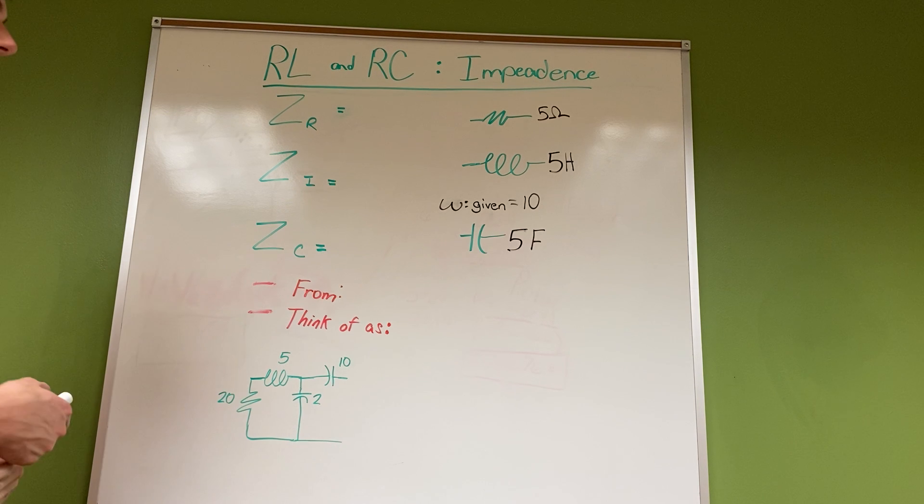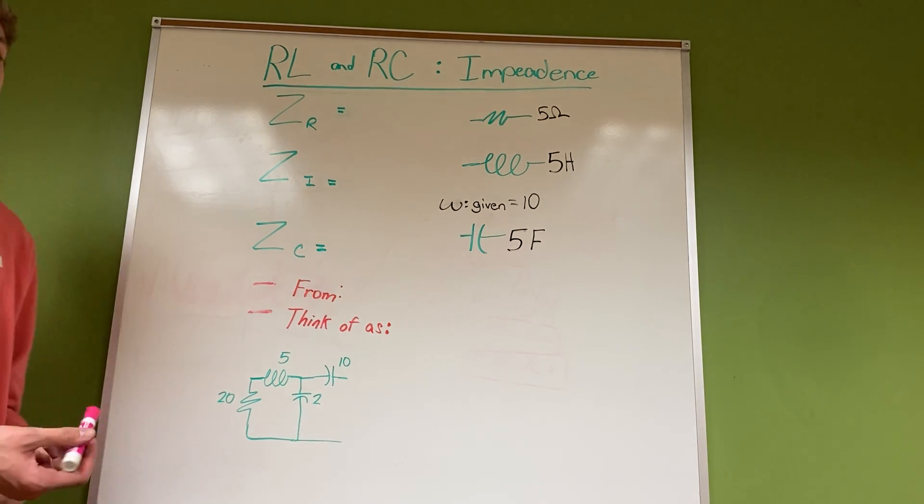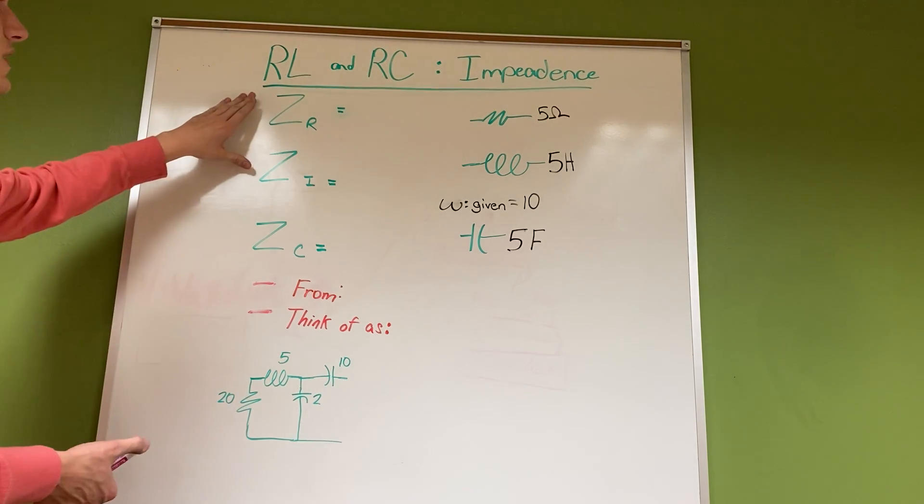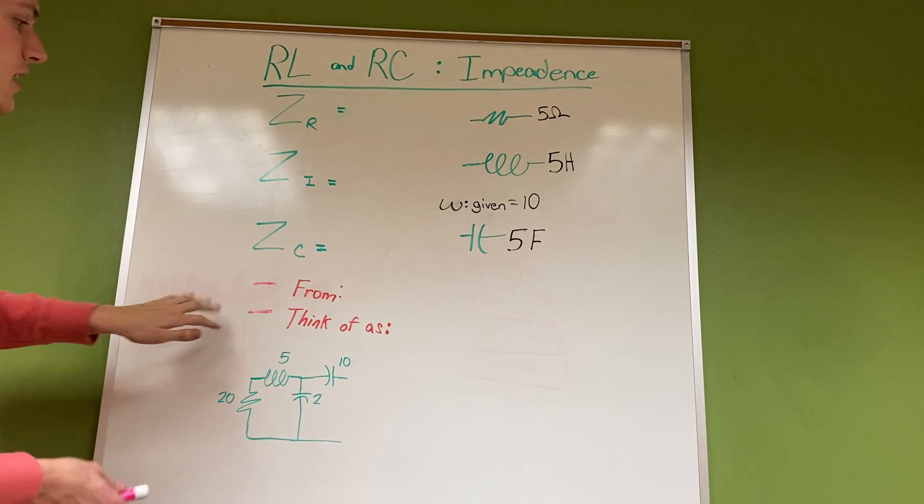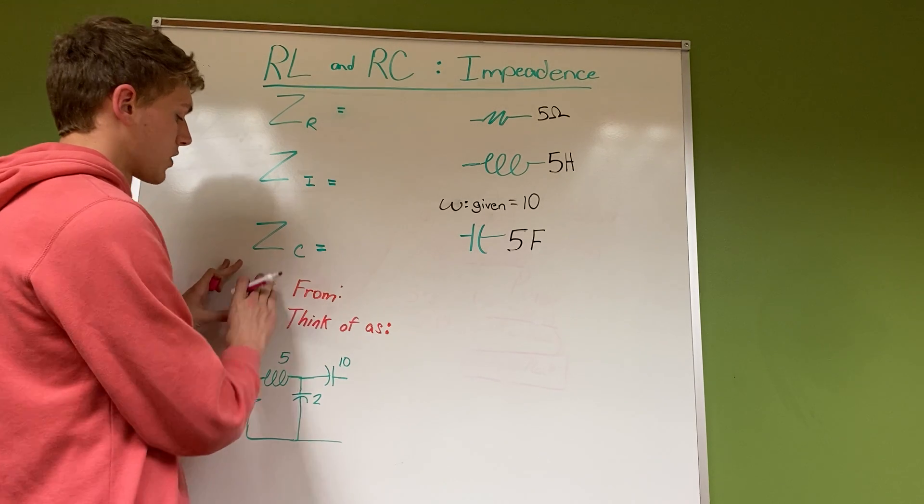In this case with impedance, with inductors or capacitors, we have to think about it differently since it could be shown as negative, or since there are j's involved for showing imaginary numbers. That's why it's labeled as Z.